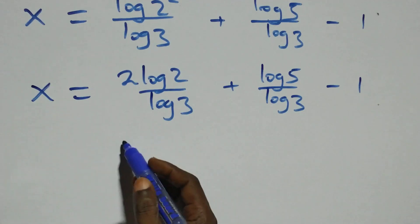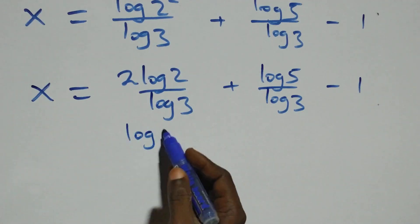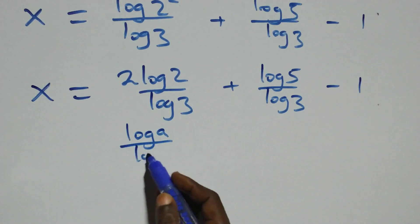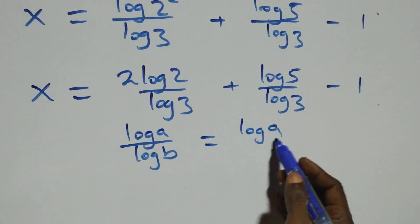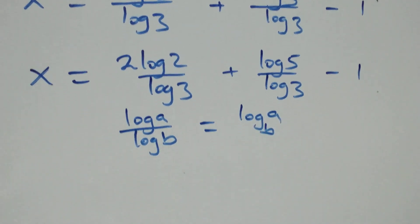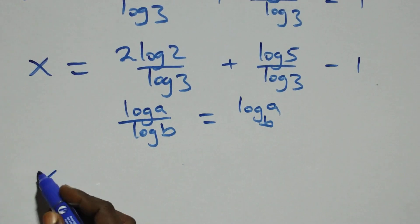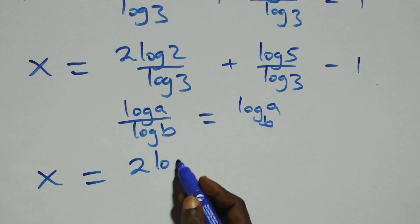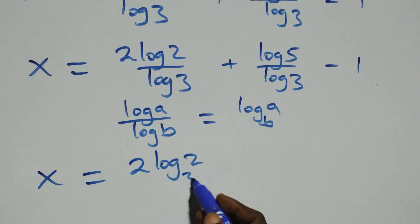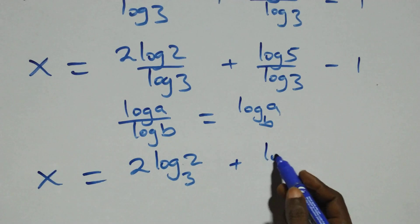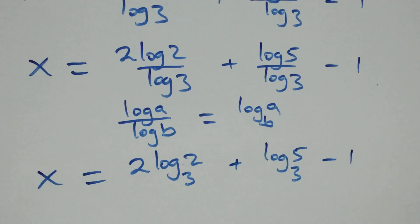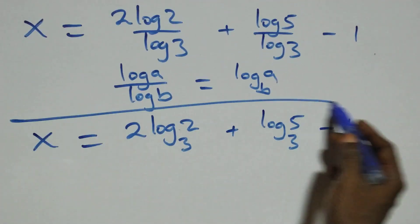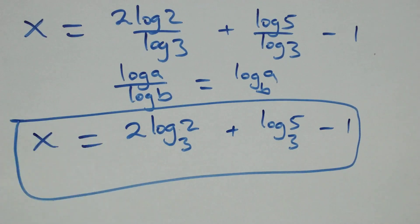We apply the change of base formula: log A over log B is the same thing as log B of A. So x equals 2 log base 3 of 2, plus log base 3 of 5, minus 1. That is the value of x: 2 log 2 base 3 plus log 5 base 3 minus 1.